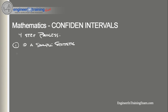Number two, we select the confidence level. The confidence level describes the uncertainty of a sampling method. Often we choose 90, 95, or 99% confidence levels, but any percentage can be used.